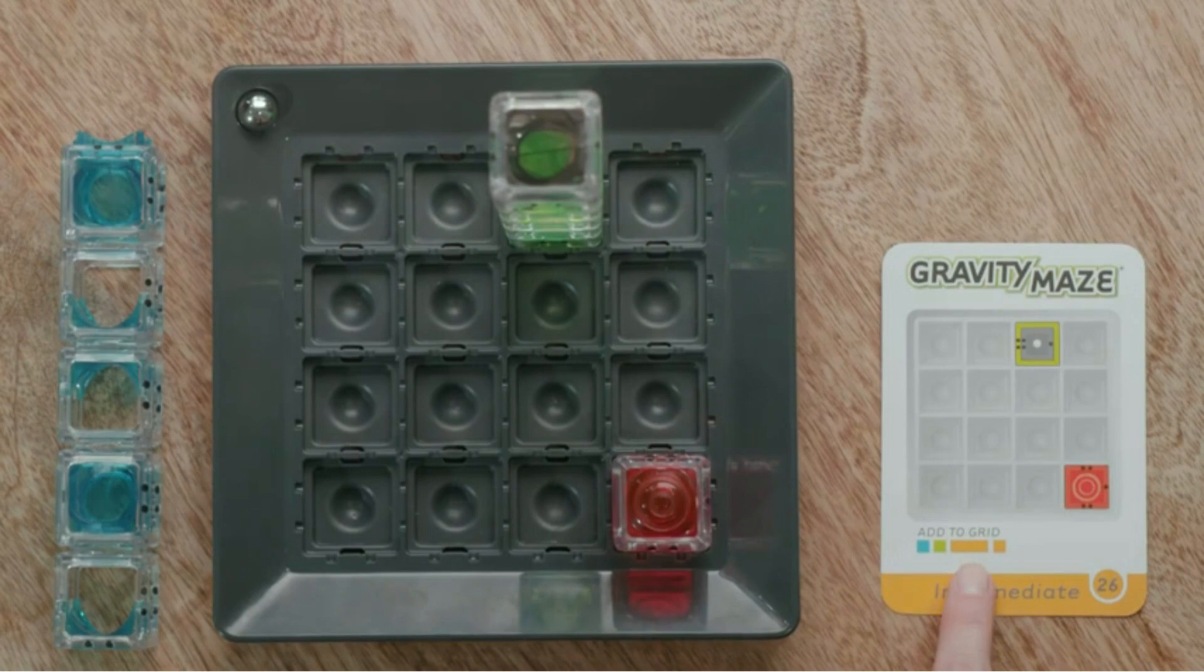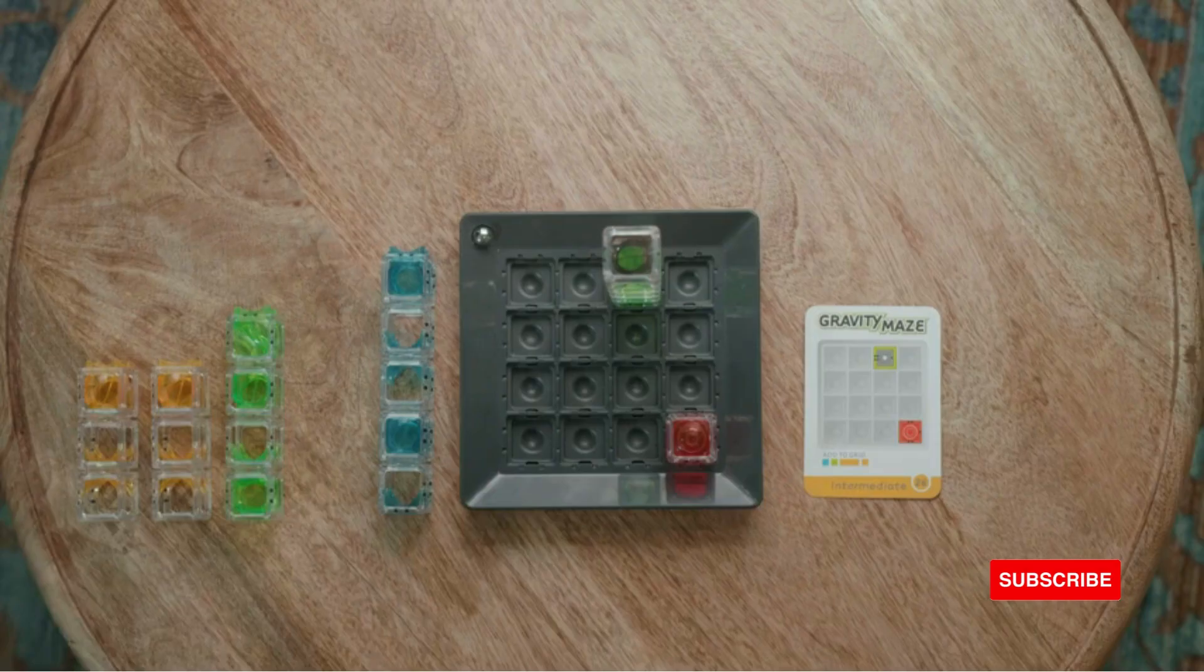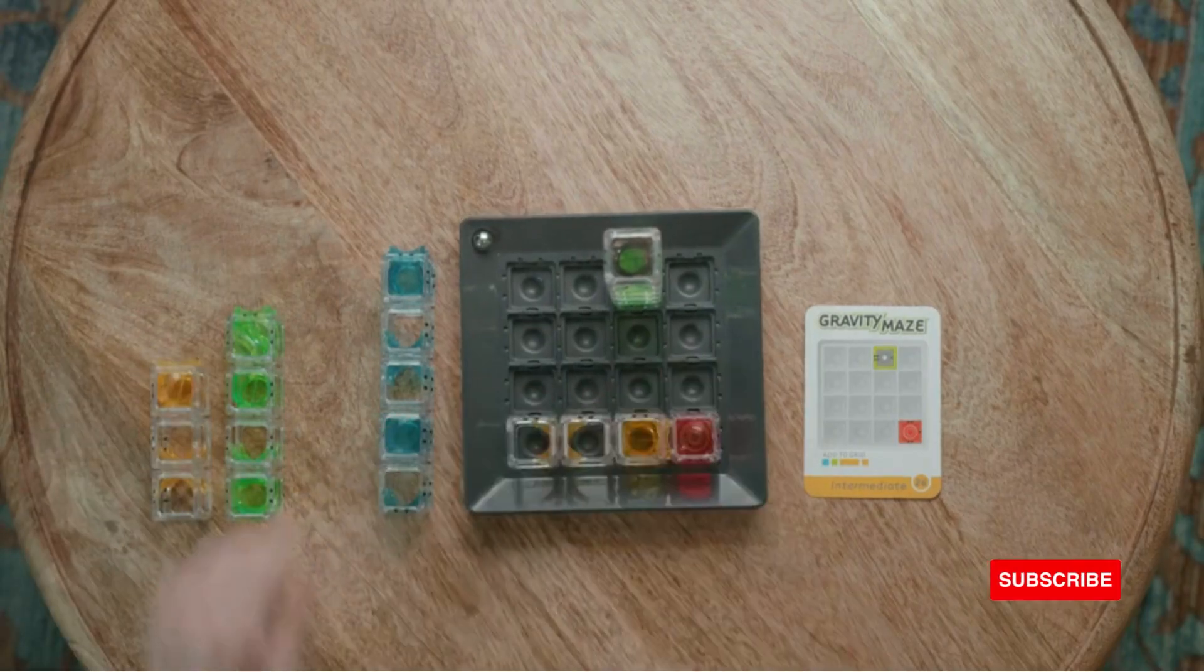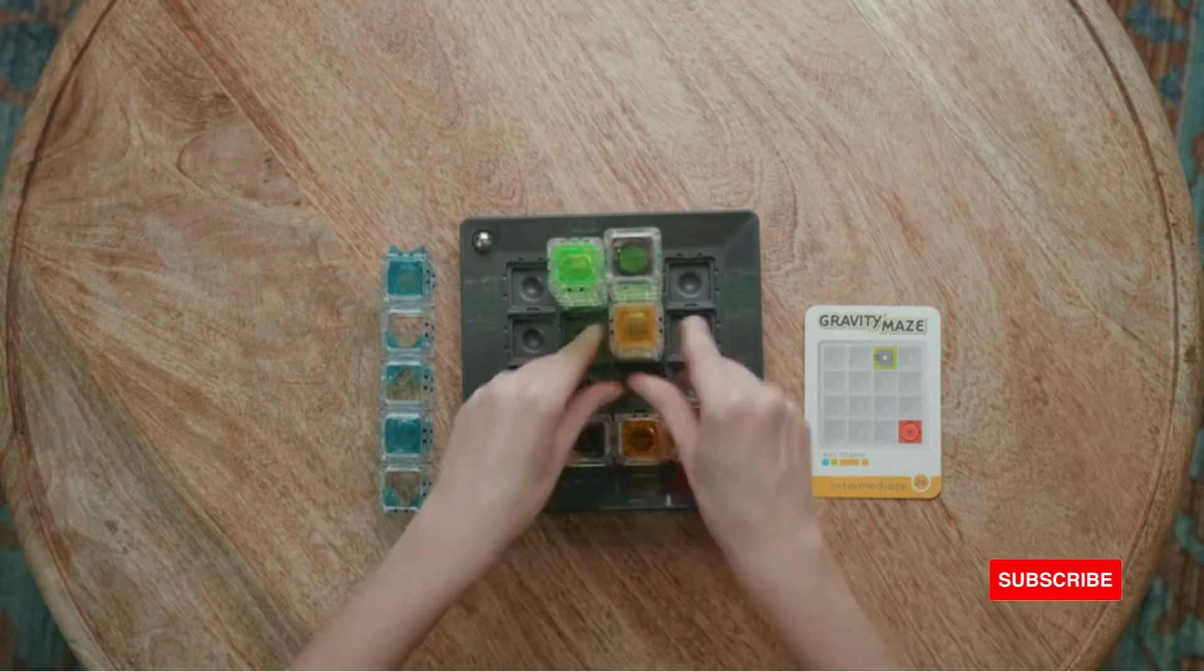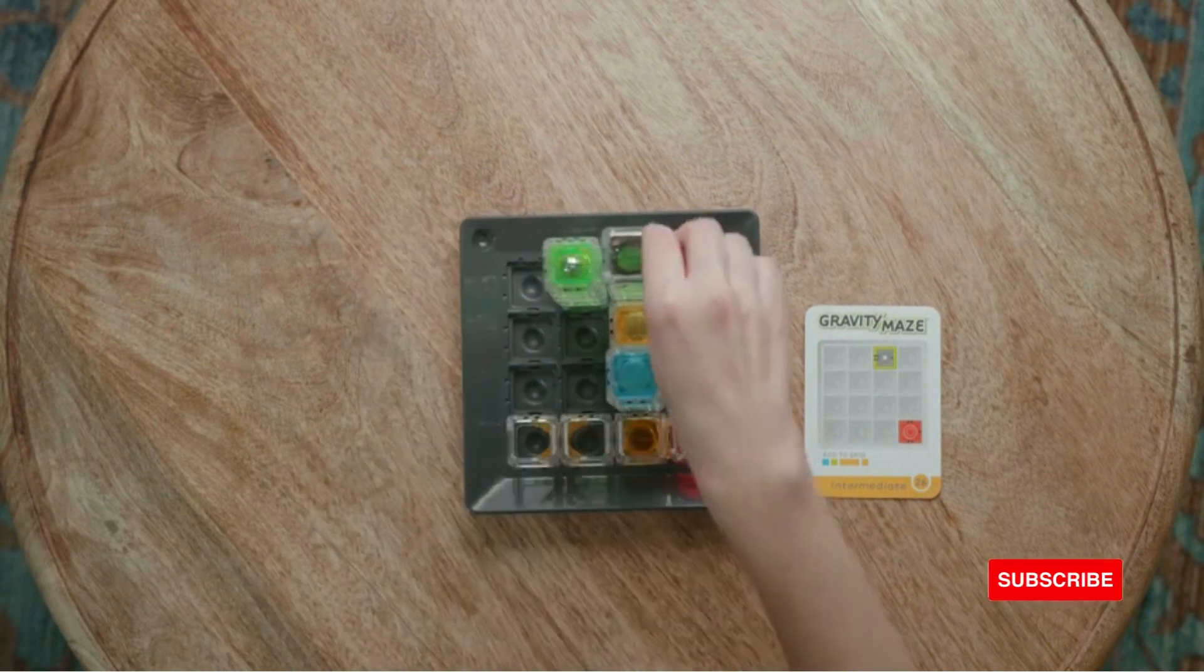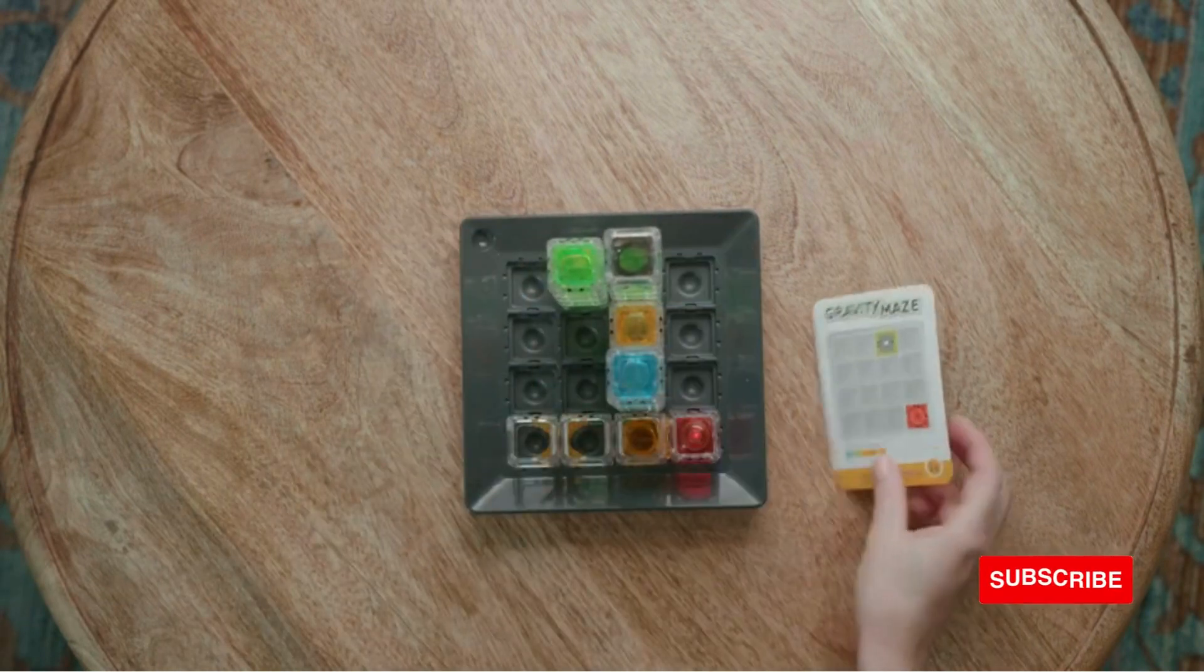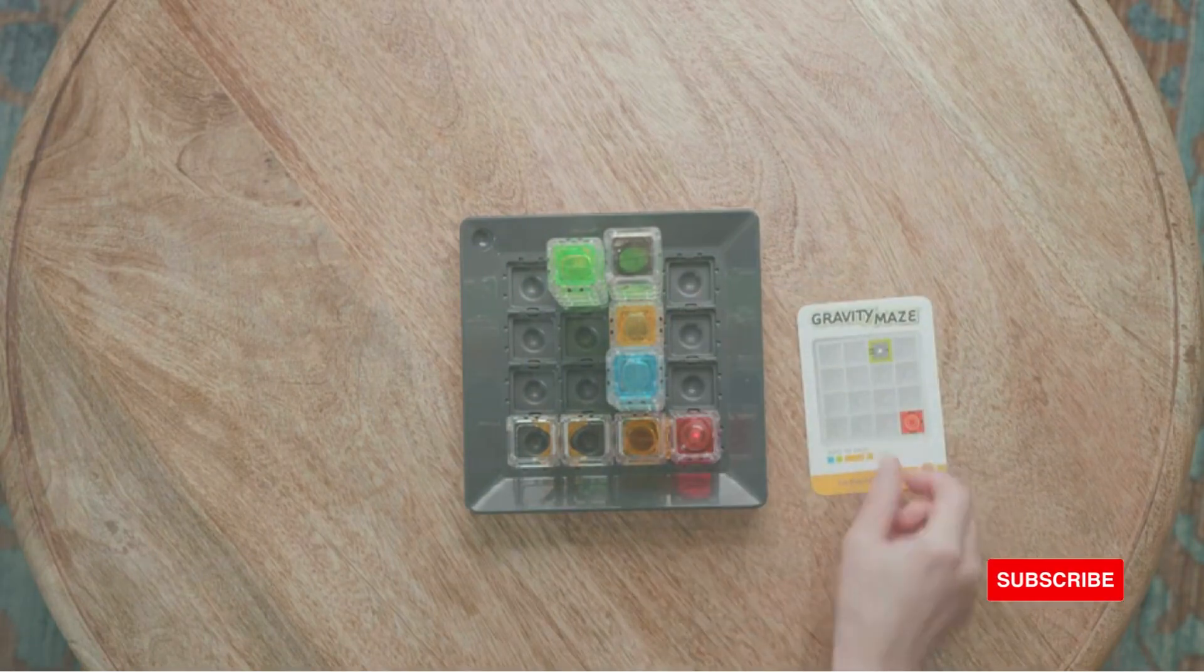If you see a long rectangle on this part of the card, it means you'll be using this tower on its side to solve the challenge. If you get stuck, you can always check the back of the card for the solution, although sometimes there's more than one way to solve a challenge.